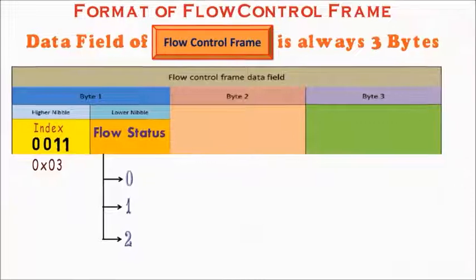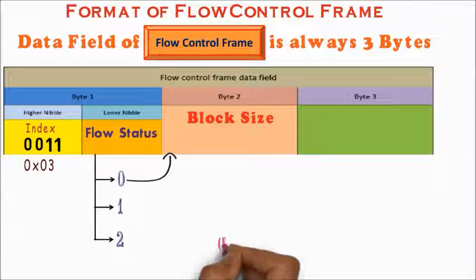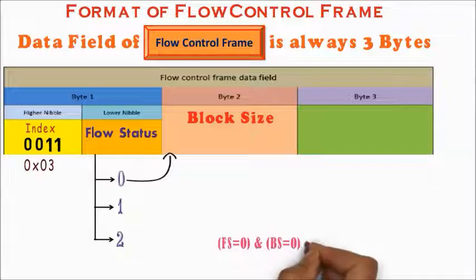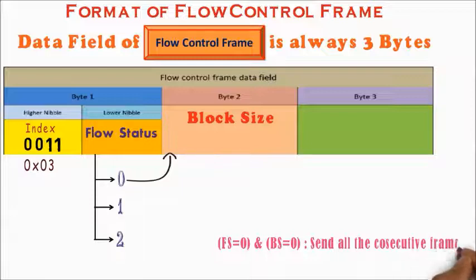The second byte of flow control frame is block size. This field is significant only when the flow status value is 0. When flow status is 0 and block size is 0, then it means send all the consecutive frames.